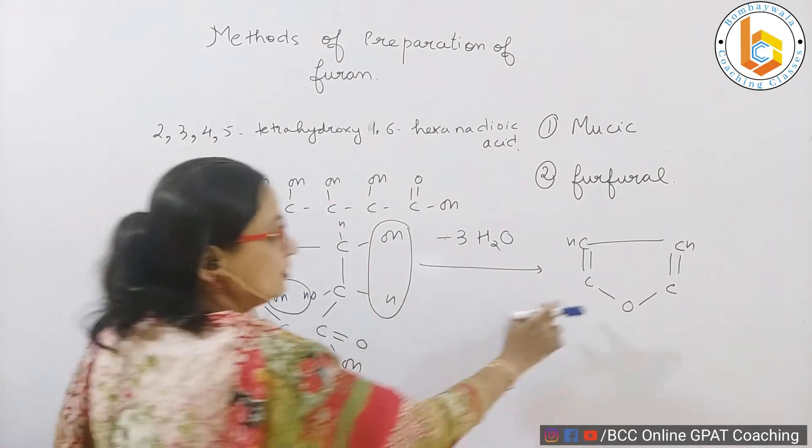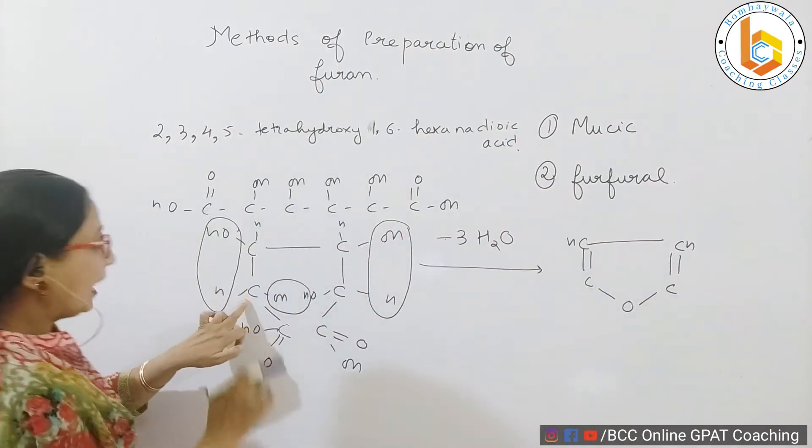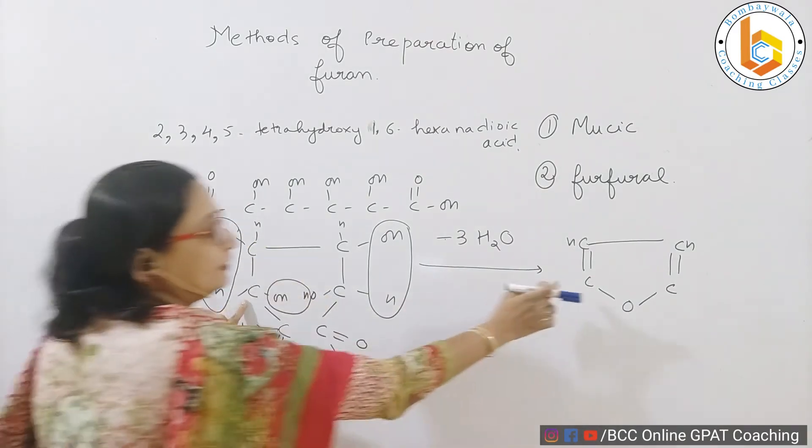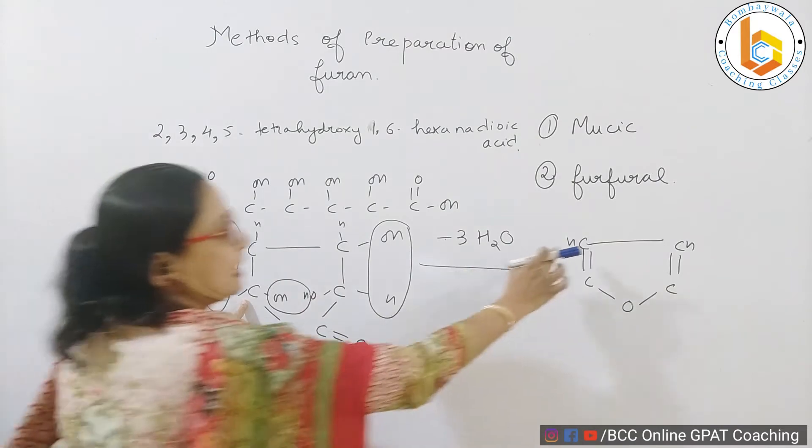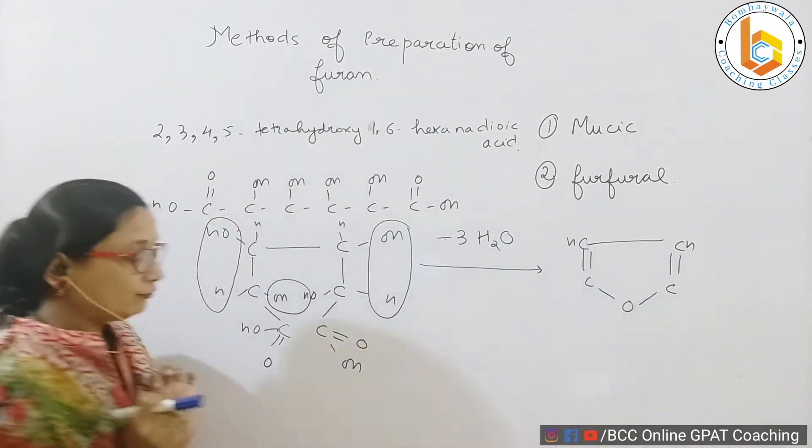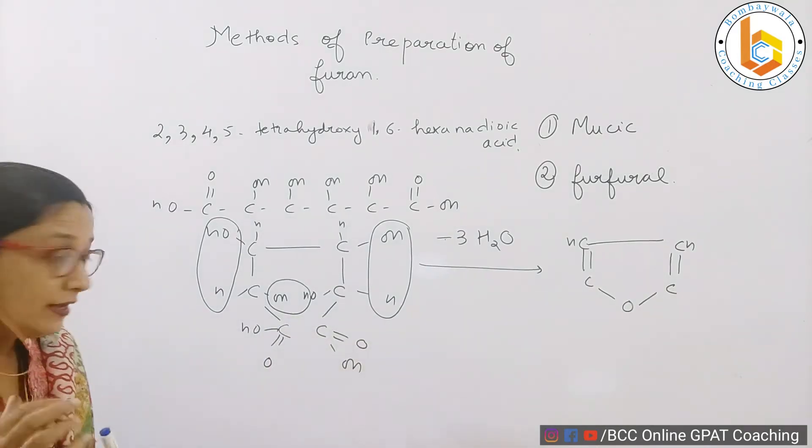There is a loss of this water molecule. I get a double bond. This hydrogen remains as it is. This hydrogen remains as it is, and I get a double bond because of another loss of water molecule.